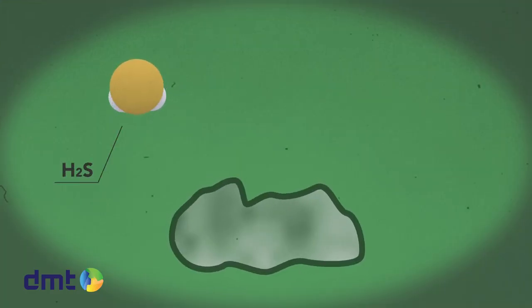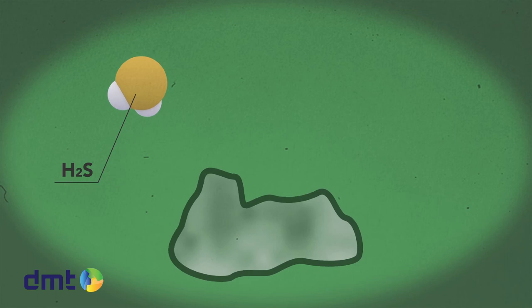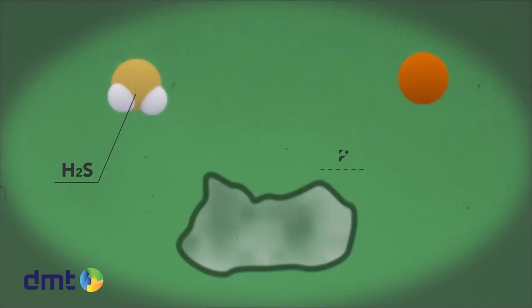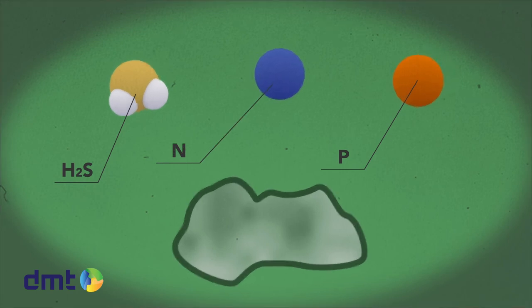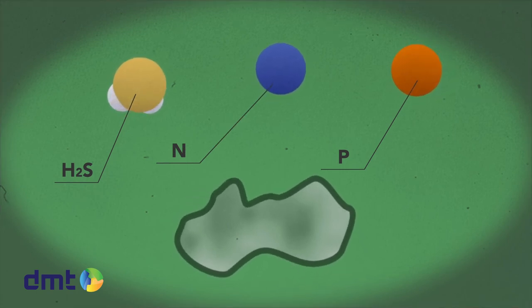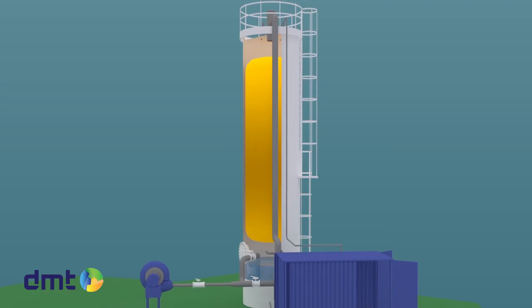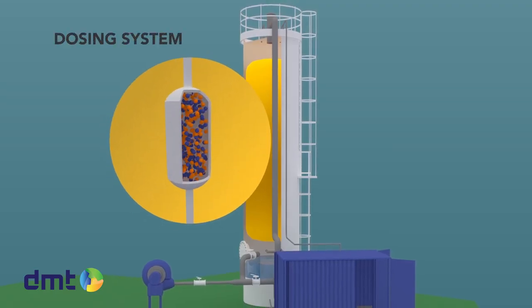Besides consuming sulfur, the bacteria also require other nutrients in lower quantities, mainly of phosphorus and nitrogen elements. These nutrients are not available in the gas and in most cases not present in the supply water. They can be added with a specifically designed dosing system.